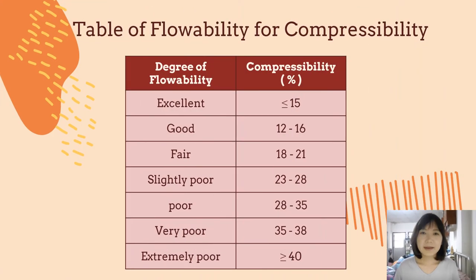Now let's look at the table of flowability from compressibility. We can know the efficiency of flowability by consulting this table. Low compressibility makes the powder flowability standard and acceptable by the factory.